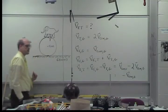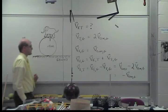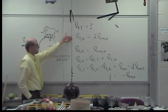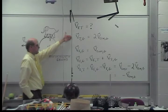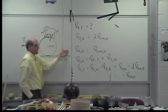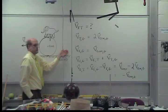The velocity of the top of the barrel relative to the ground is equal to twice the velocity of the center of mass of the barrel relative to the ground. We want the velocity of the elephant relative to the ground to be equal to the velocity of the barrel's center of mass relative to the ground.